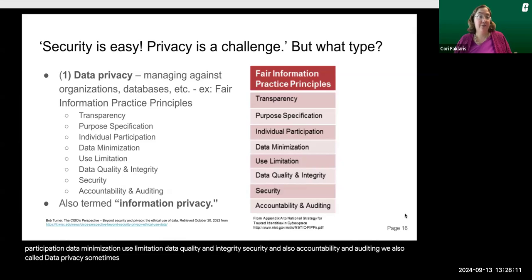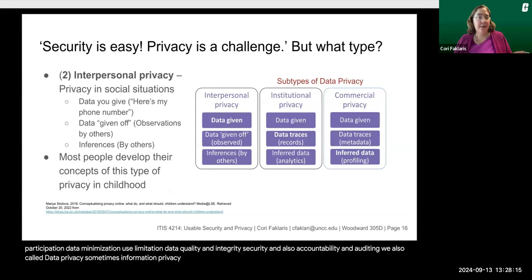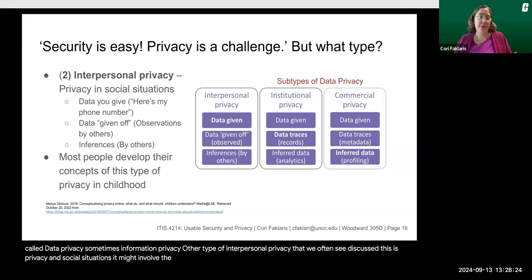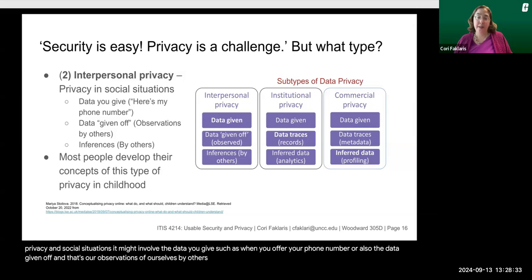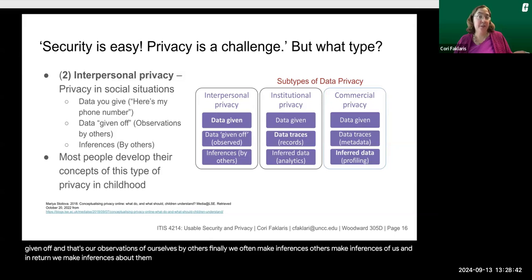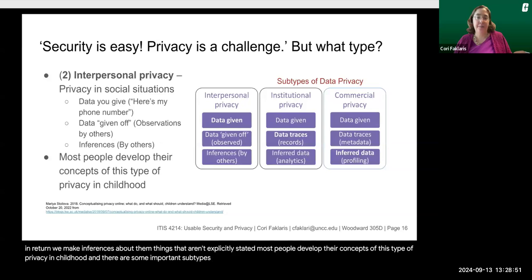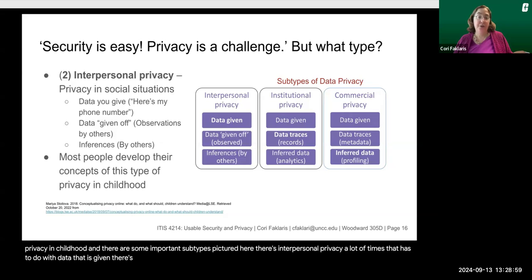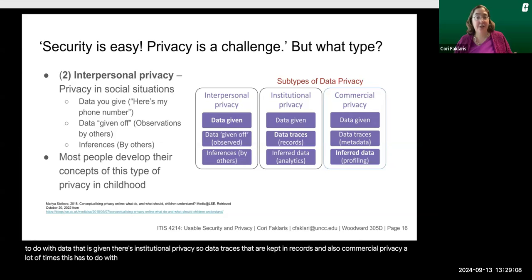We also call data privacy sometimes informational privacy. There's another type — interpersonal privacy — which is privacy in social situations. It might involve the data you give, such as when you offer your phone number, or also the data given off, which are observations of yourself by others. We also often make inferences; others make inferences of us and we make inferences about them — things that aren't explicitly stated. Most people develop their concepts of this type of privacy in childhood. There's also institutional privacy — data traces kept in records — and commercial privacy, which often involves inferred data, such as profiles that data brokers create about us.